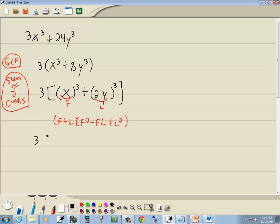The 3 carries down out in front. Everywhere there's an f, I'll plug in x. Everywhere there's an l, I'll plug in 2y. So we've got x plus 2y, and then x squared minus x times 2y plus 2y squared.